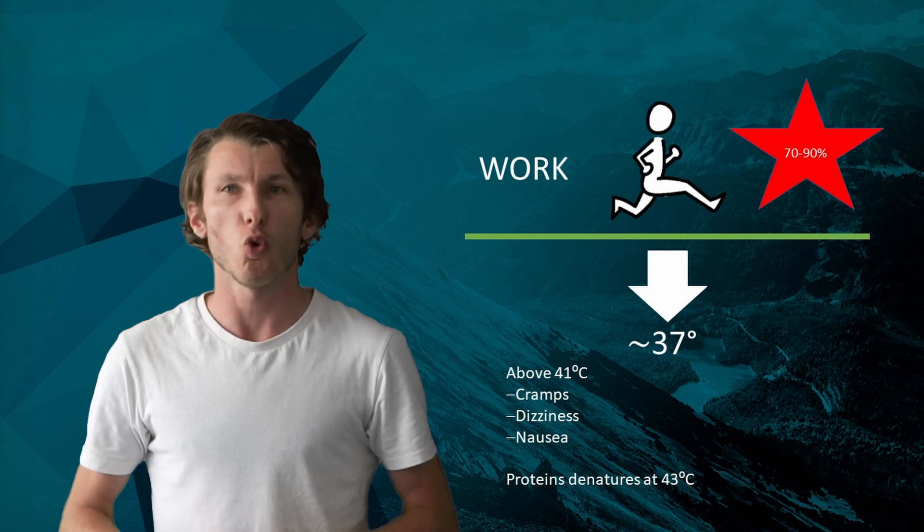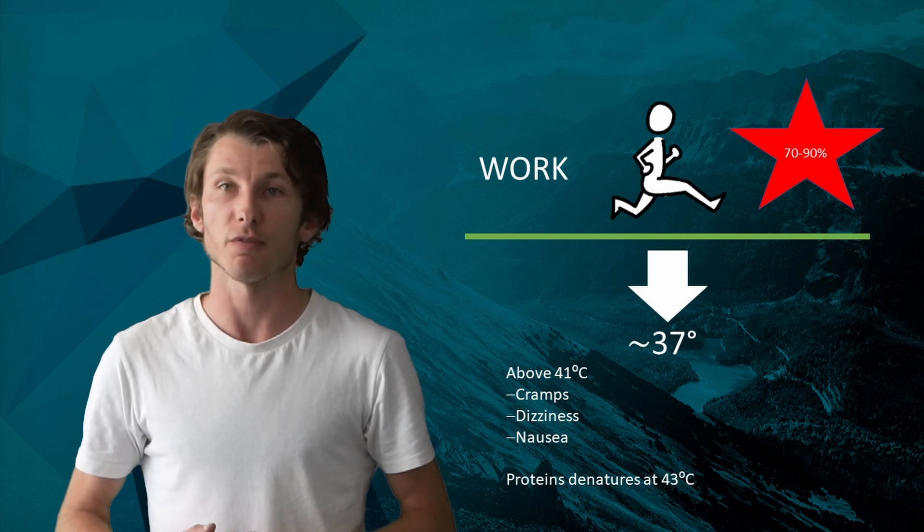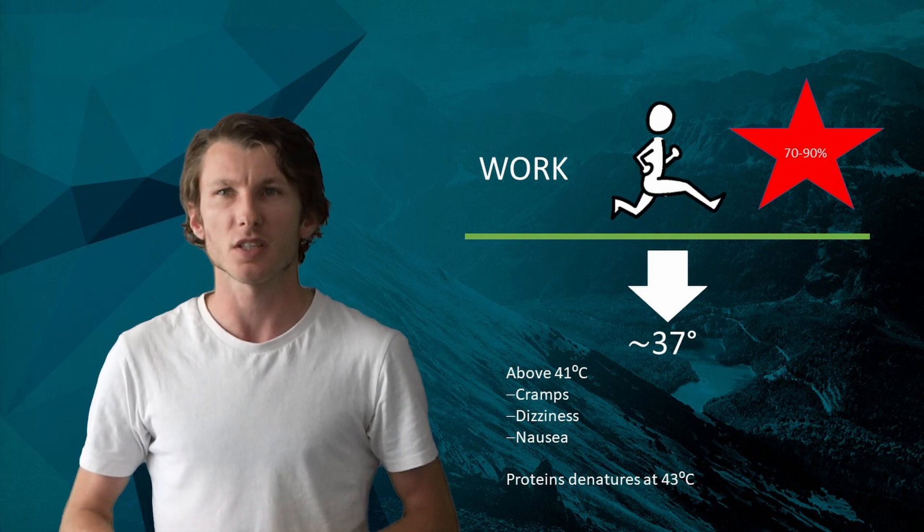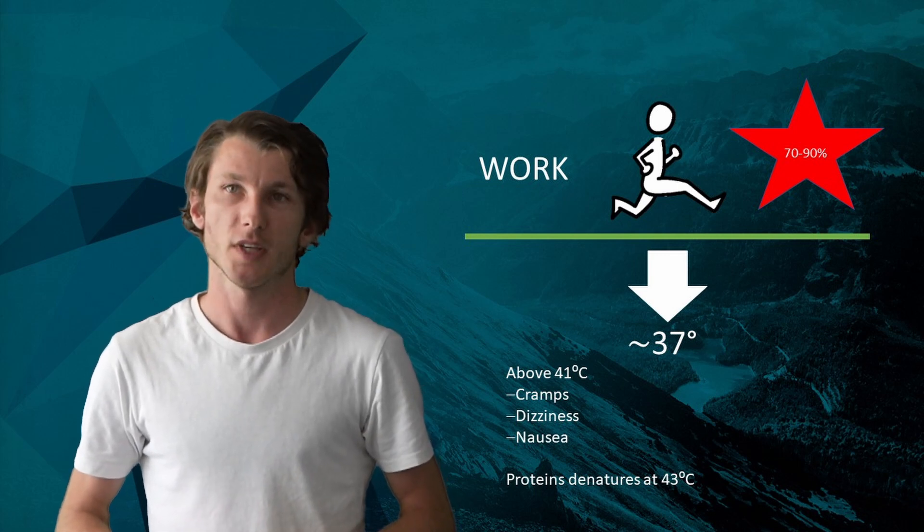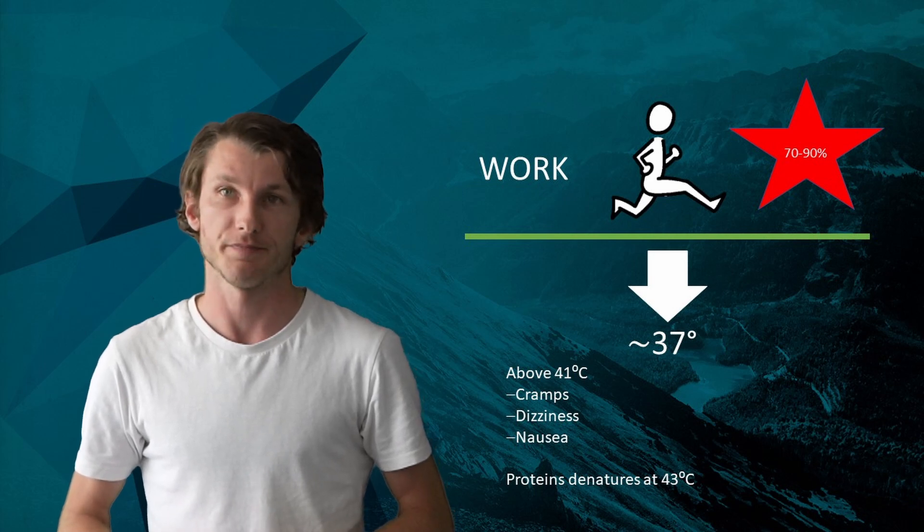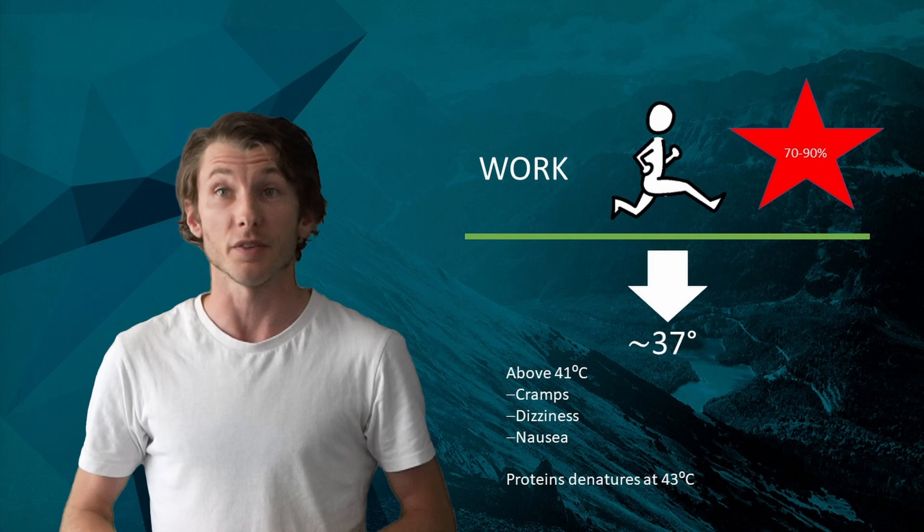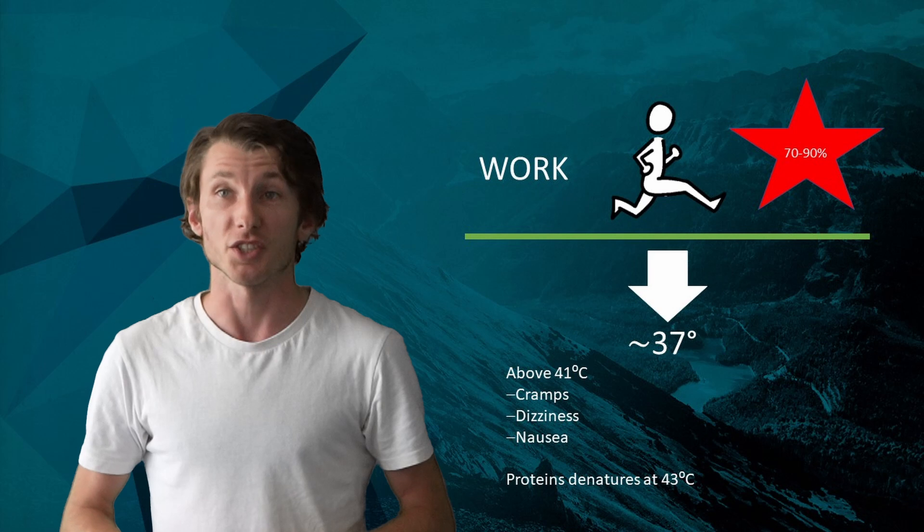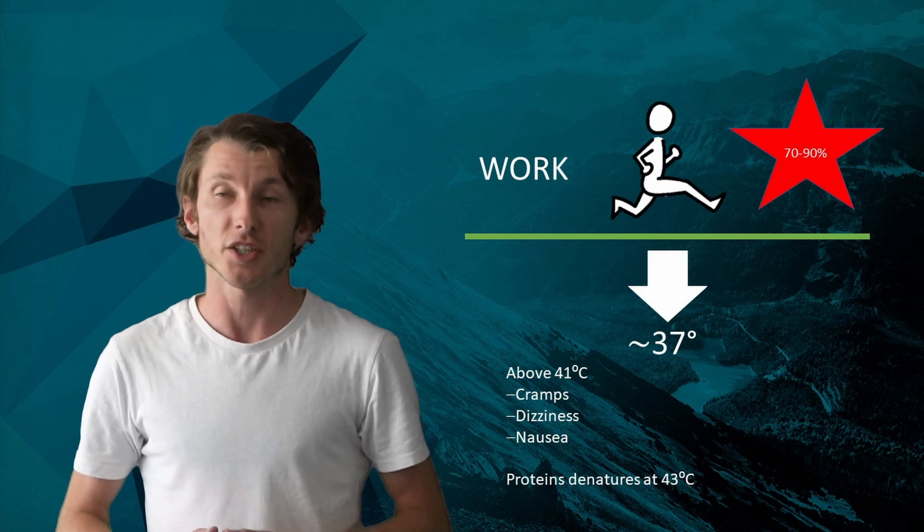Once we reach core body temperatures of around 41 degrees and above, our bodies slowly start to shut down, causing cramps, dizziness and nausea. After 43 degrees, our bodies' proteins actually start to break down and we have extreme thermoregulatory impairments such as heat stroke. Essentially, we start to cook ourselves.